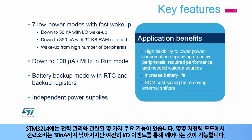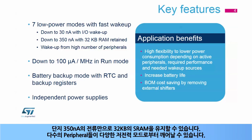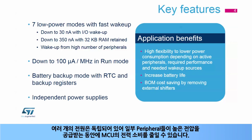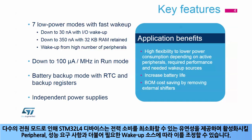The STM32L4 has several key features related to power management. Several low-power modes down to 30 nanoamps, while it is still possible to wake up the MCU with an event on an I/O. For only 350 nanoamps, 32 kilobytes of SRAM can be retained. A large number of peripherals can wake up from the various low-power modes. Dynamic consumption is down to 100 microamps per MHz executing from flash memory. A battery backup domain called VBAT includes the RTC and certain backup registers. Several power supplies are independent, allowing you to reduce MCU power consumption while some peripherals are supplied at higher voltages. Thanks to the large number of power modes, STM32L4 devices offer high flexibility to minimize power consumption and adjust it depending on active peripherals, required performance, and needed wake-up sources.